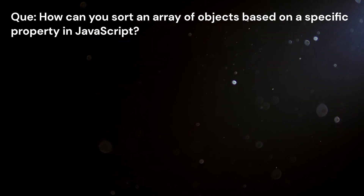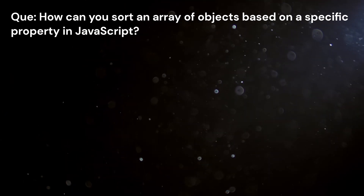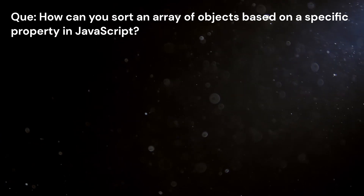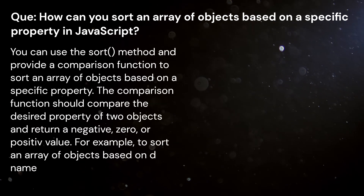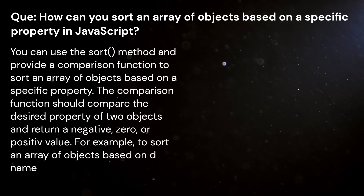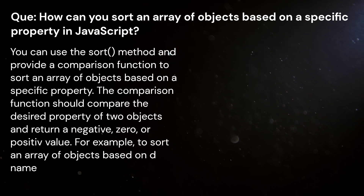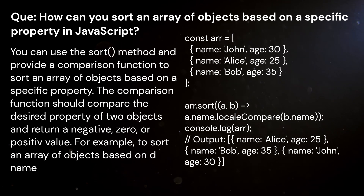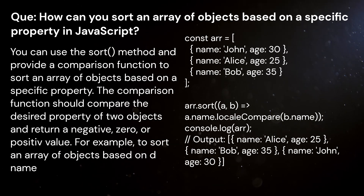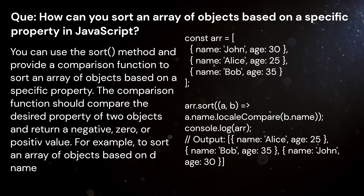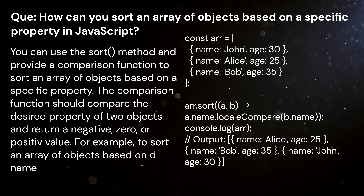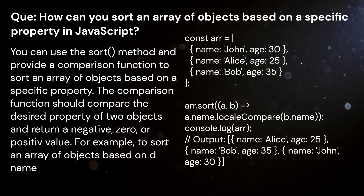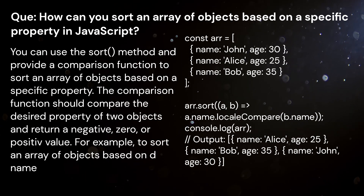Question: How can you sort an array of objects based on a specific property in JavaScript? Answer: You can use the sort method and provide a comparison function to sort an array of objects based on a specific property. The comparison function should compare the desired property of two objects and return a negative, zero, or positive value. For example, to sort an array of objects based on the name property.